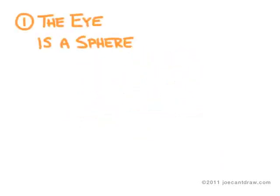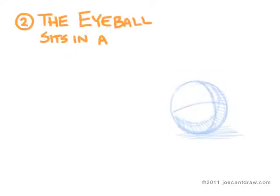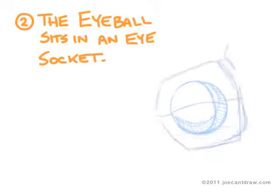To begin with, the basic structure of the eye is a sphere. This sphere sits inside of an eye socket, and it's important to establish the relationship between the two before you move on with your drawing.